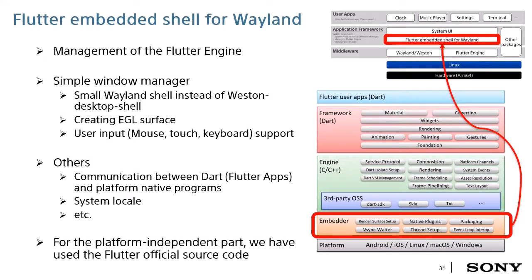I will share about the graphics shell for Flutter. As I mentioned, the graphics shell has mainly three functions. The first is managing the Flutter engine — it uses the Flutter Embedder APIs to manage a Flutter application running on the Flutter engine. The second is a simple window manager: it runs as a desktop shell client on Weston and creates an EGL surface for the Flutter engine, and sends user input events such as mouse, touch, and keyboard to the Flutter engine. The third covers communication between Dart and platform native programs, including system locale updates and so on. We've been using the Flutter official source code as a platform-independent port.